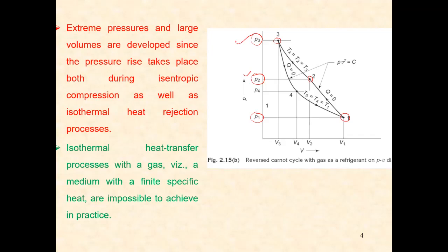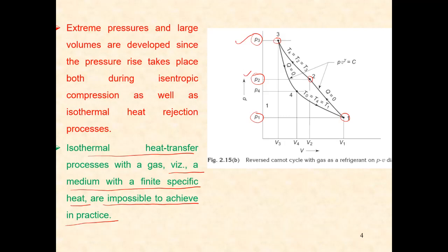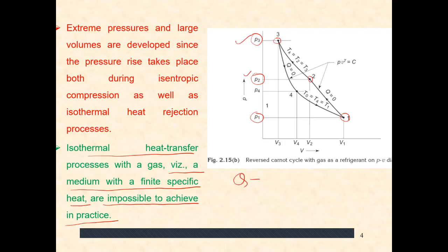The next limitation is that the isothermal heat transfer process with gas, which is a medium with finite specific heat, is impossible to achieve in practice. In the reverse Carnot cycle, there is no temperature difference between the source and the system, and when there is no temperature difference, how will heat be transferred? From the formula of heat transfer, Q is equal to CP times delta T. If the value of delta T is very small, the value of CP should be very large, and that is not the case with a gas. This is why we cannot use gas as a refrigerant in a reverse Carnot cycle.